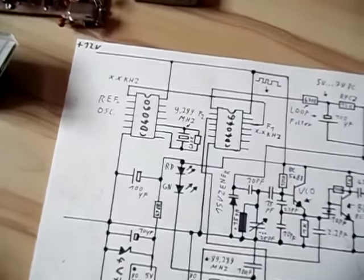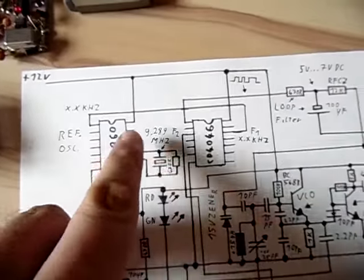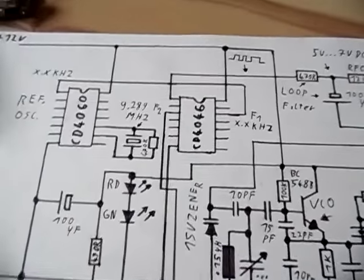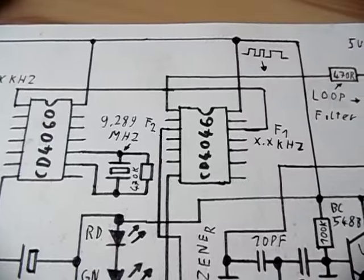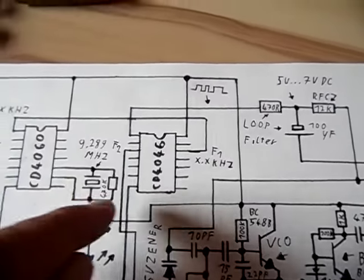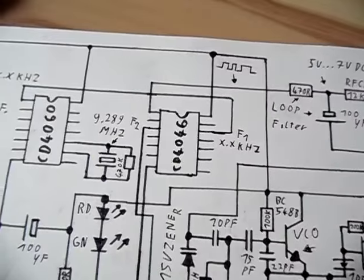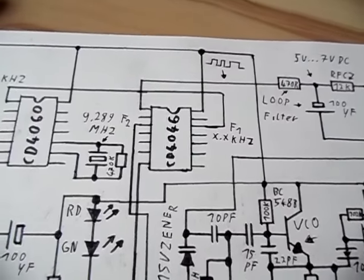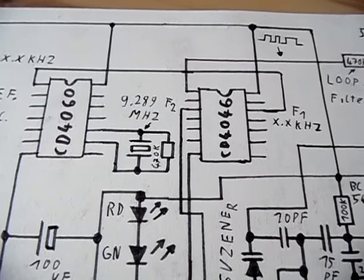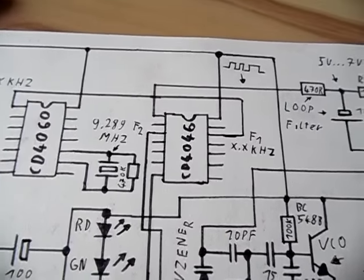So we have the reference oscillator with the crystal that generates a reference frequency, and that reference frequency is frequency one, if you want to call it like that, and goes into the most important part of the PLL transmitter, which is the actual PLL chip. The PLL chip does compare frequencies.